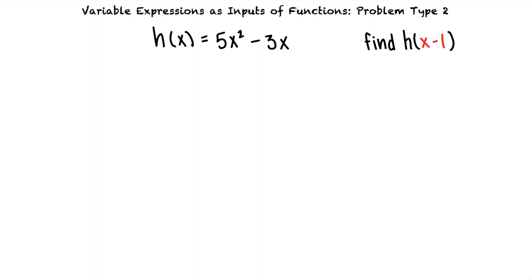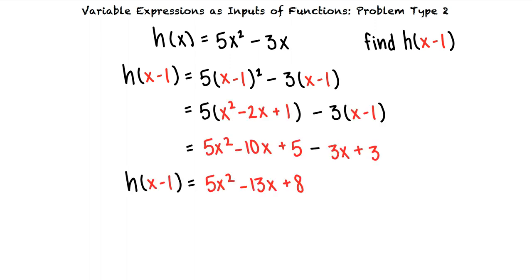When we do this, we see that h of x minus 1 equals 5 times the quantity x minus 1 squared minus 3 times the quantity x minus 1. When we simplify the right side of our equation, we see that h of x minus 1 equals 5x squared minus 13x plus 8.